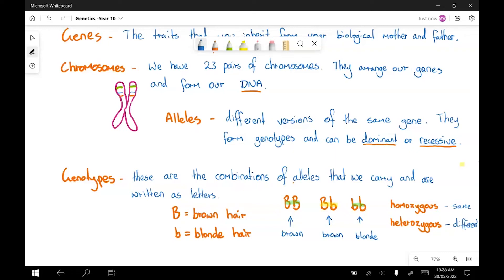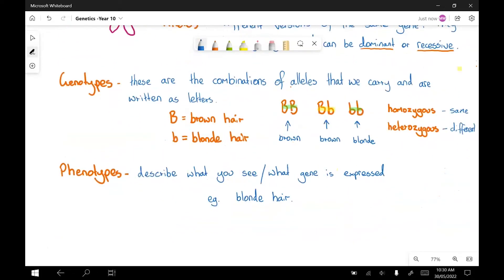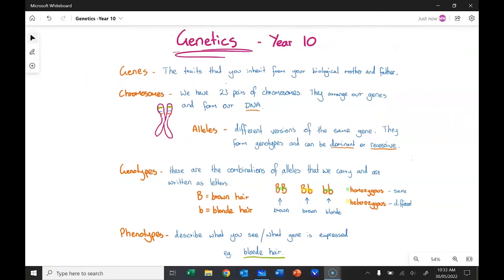And the last part of this puzzle is the word phenotypes. And these describe what you see, or in other words, which gene is expressed. So a good example, if we're having a look back here at this example, if you're seeing a genotype for little b little b, that's going to be blonde hair. The phenotype is for blonde hair. Right, now that we've covered all that terminology, maybe just pause me for a minute and get all of this down, because you'll need to remember what each of these words mean, and we'll move into some examples.